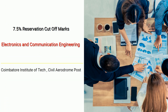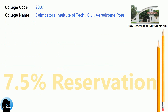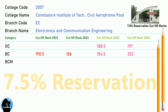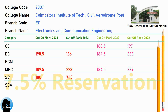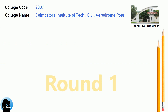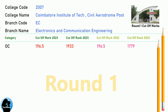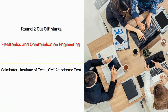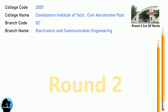DNEA 7.5 Reservation Cut-Off for Coimbatore Institute of Technology in Electronics and Communication Engineering, SS. DNA Round 1 Cut-Off for Coimbatore Institute of Technology in Electronics and Communication Engineering. DNA Round 2 Cut-Off for Coimbatore Institute of Technology in Electronics and Communication Engineering.